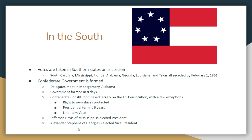Votes are taken in Southern states on whether to leave the Union. South Carolina, Mississippi, Florida, Alabama, Georgia, Louisiana, and Texas all secede before February 1st, 1861 — again, before Lincoln even takes office. However, not all slave states leave immediately. Tennessee, Virginia, and Kentucky hold votes but do not vote to leave at that time, taking a wait-and-see approach.